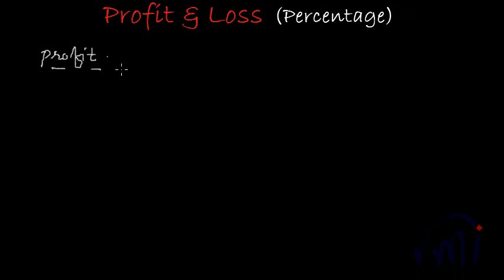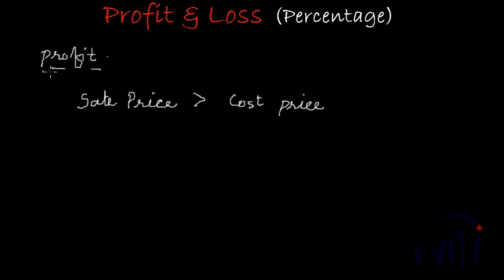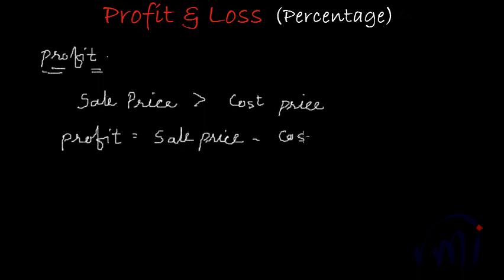If you have some object and you are selling it at a higher price than its cost price — that means when sale price is more than cost price — we say you are selling it at a profit. The amount of profit will be equal to the sale price minus the cost price.